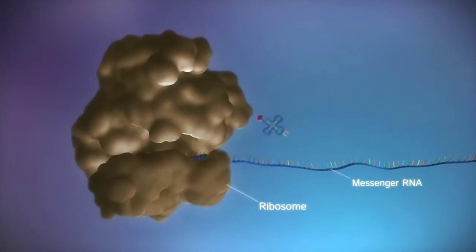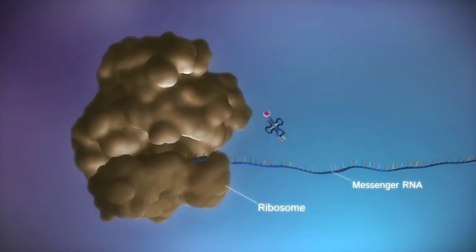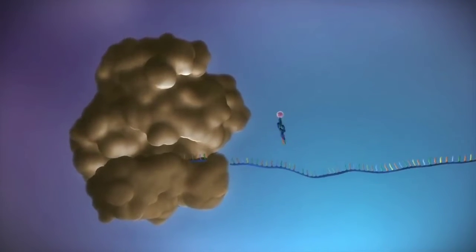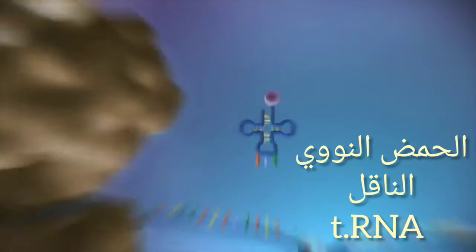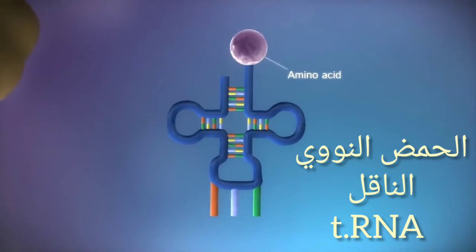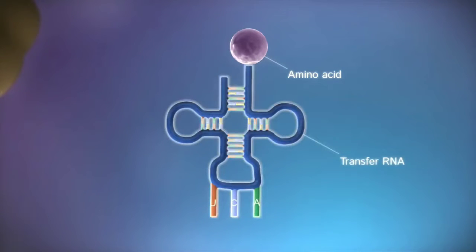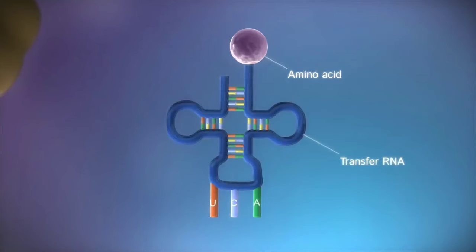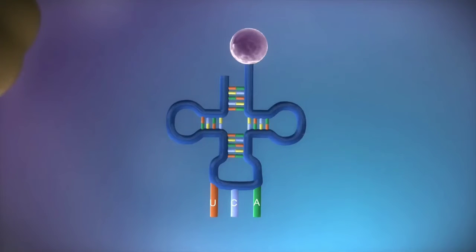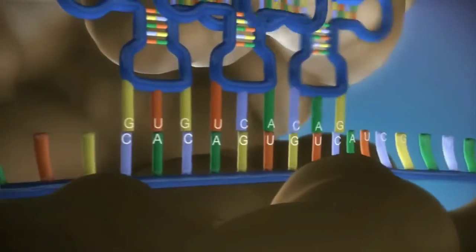The ribosome reads the code in the messenger RNA to produce a chain made up of amino acids. There are 20 different types of amino acid. Transfer RNA molecules carry the amino acids to the ribosome. The messenger RNA is read three bases at a time.